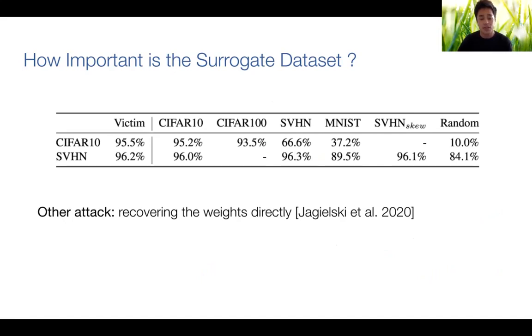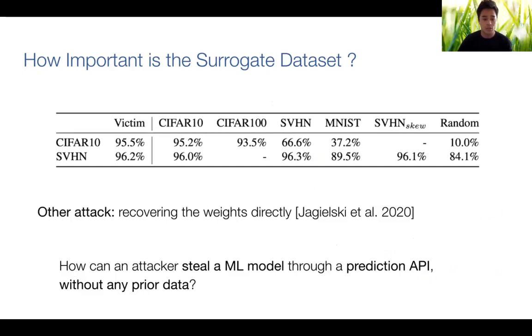Other kinds of attacks exist, for example by recovering the weights directly, but in this work we focus on this question: how can an attacker steal a machine learning model through an API without any prior data?